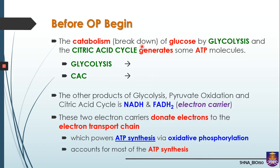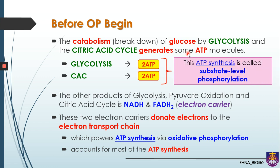Before OP begins, the catabolism or breakdown of glucose by glycolysis and the citric acid cycle also generate some ATP molecules. In glycolysis, two ATP are produced, and similarly the citric acid cycle (CAC) also produces two ATP molecules, but both use substrate-level phosphorylation. Apart from that, there are byproducts of glycolysis, pyruvate oxidation, and citric acid cycle — namely NADH and FADH2 — which act as electron carriers. These electron carriers are incredibly important because they will donate electrons to the ETC and power the production of a large amount of ATP.